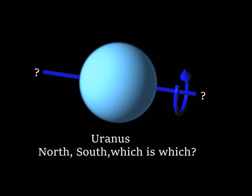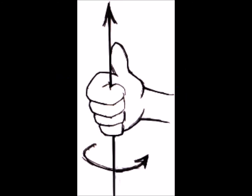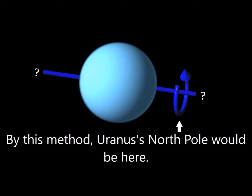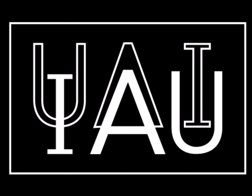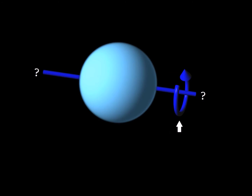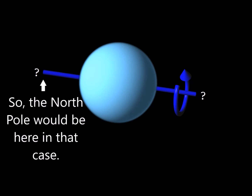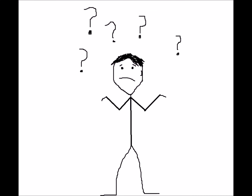How do we determine which of Uranus's poles is the north pole and which one is the south pole? If we use the right-hand rule — something you'll use if you take physics — we define the north pole of a planet as the one which rotates counterclockwise when looking down at it from above. However, another convention from the International Astronomical Union states that the north pole of a planet is the one that lies above the plane of the ecliptic, regardless of the direction of the planet's spin. So your guess is as good as mine on this one.